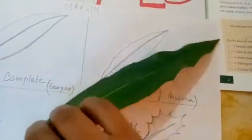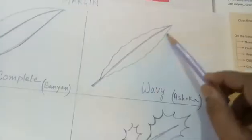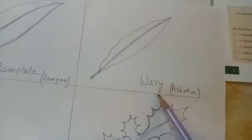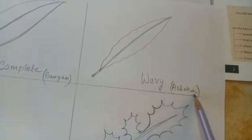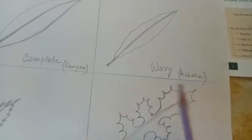So, that's why few leaves are completely, the complete margin of few leaves are wavy. They will be called wavy, like asoka. In our school, we have that tree, asoka tree. We will see that.